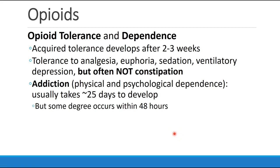Opioid tolerance means that patients no longer have the expected clinical effect to a given dose of drug. Tolerance occurs after about two to three weeks of continuous opioid therapy. Patients develop tolerance to analgesia, euphoria, sedation, and ventilatory depression. Most sources say that patients do not develop tolerance to the constipation side effects. Addiction, defined as a physical or psychological dependence, usually takes about 25 days to develop, but we now know that some degree of dependence can begin to form within 48 hours of exposure to opioids.